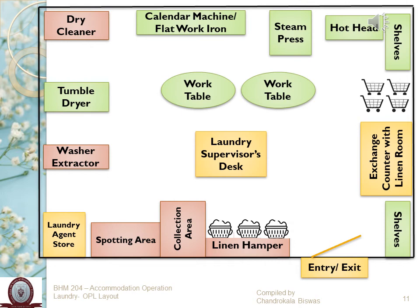Fabrics like bed sheets, pillow covers, and table linen need ironing — these articles are flat in nature, so directly from the washer extractor they go to the calendaring machine or flat work ironer. Once ironed, they are folded, stored briefly, and back into the linen room for circulation. For guest laundry, there can be a request for dry cleaning, so most OPLs will have a dry cleaning machine. When it comes to guest clothing or staff uniforms, you may need a steam press or a hothead to iron those clothing materials properly.